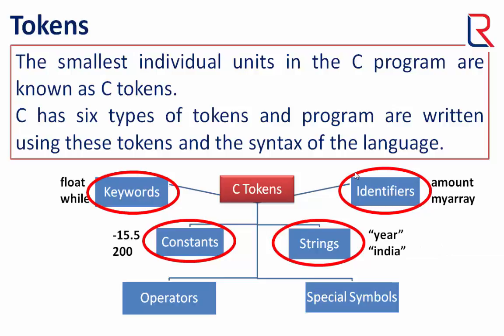Now let's see operators. An operator is a symbol that tells the computer to perform certain operations, like plus, minus, asterisk, slash, etc. The last token type is special symbols. Apart from letters and digits, all symbols typed from the keyboard are special symbols. They have specific meaning and operation as per use, like square brackets used for arrays in C language and curly braces used as the body of a particular part in the program.